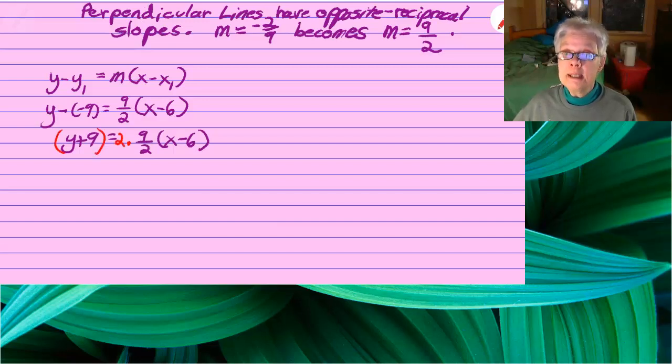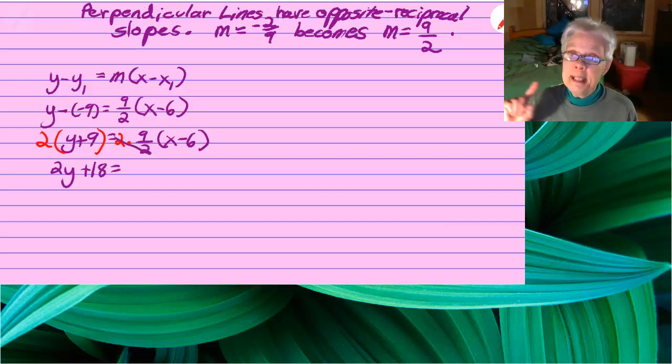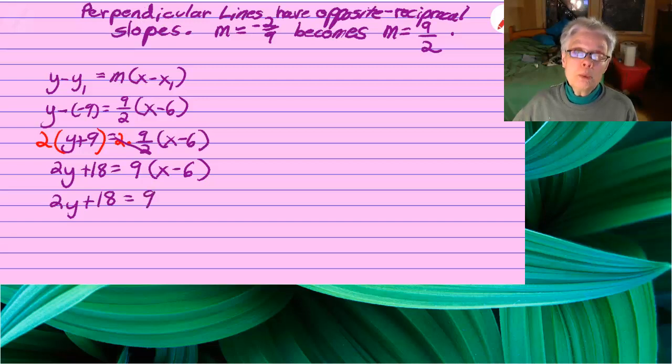Distribute on the left and cancel on the right. So 2y plus 18 equals 9x minus 54.